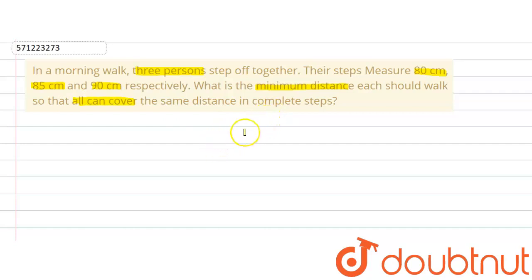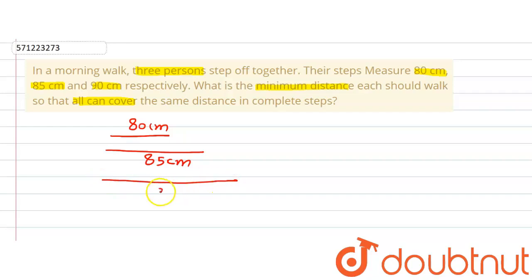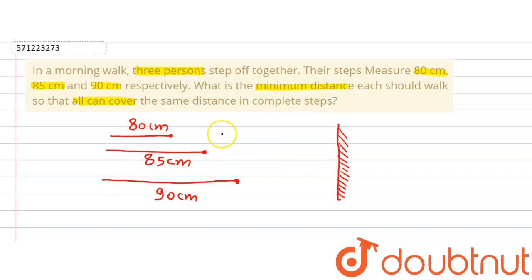That means we need the next time they all will meet — what should be that distance? Because there is a difference in their steps: for one person the measure of one step is 80 cm, for the second person it is 85 cm, while the third has a step of 90 cm. At one point, one person will be here, the other here, and the third here. The question asks for the minimum distance at which all three will be at the same point. For that, we are going to find the lowest common multiple of 80, 85 and 90, because that will be the distance at which they all will be together again.